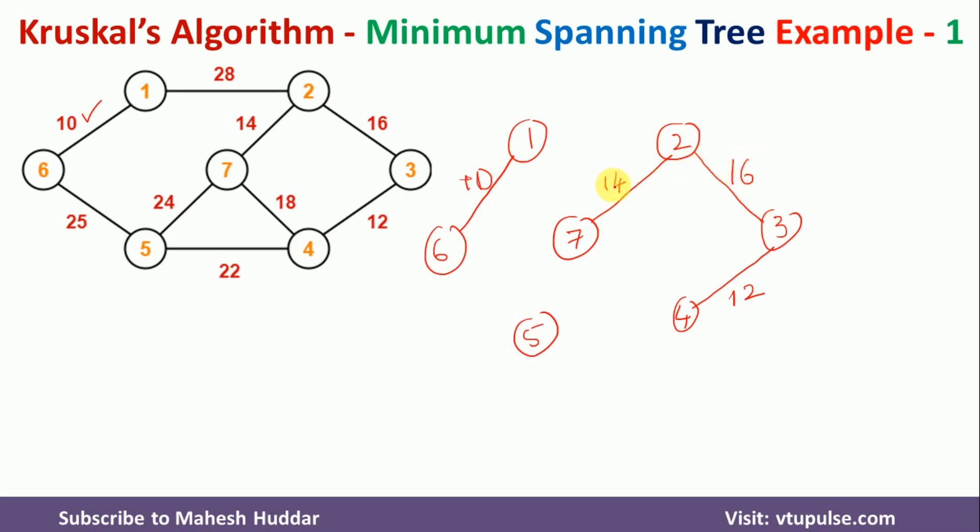Now, if you consider the remaining edges, the edge between 4 and 5 is having the minimum weight. The weight is 22 in this case.